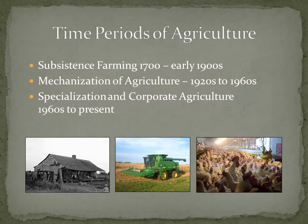I'm breaking down the periods of agriculture into three time periods: the first being subsistence farming, which was the period of homesteading from the 1700s to early 1900s; the mechanization of agriculture from the 1920s to the 1960s; and the specialization and influx of corporate agriculture from the 1960s to the present.